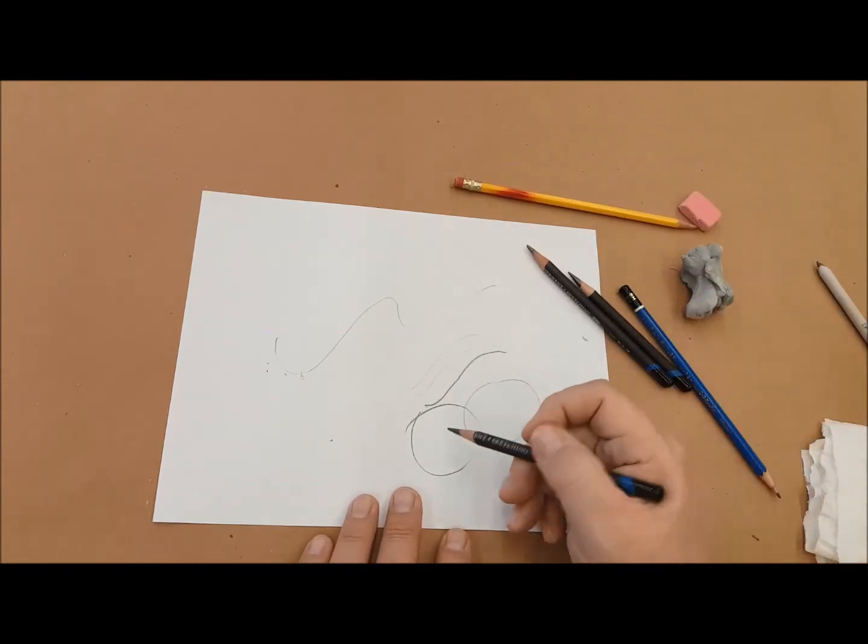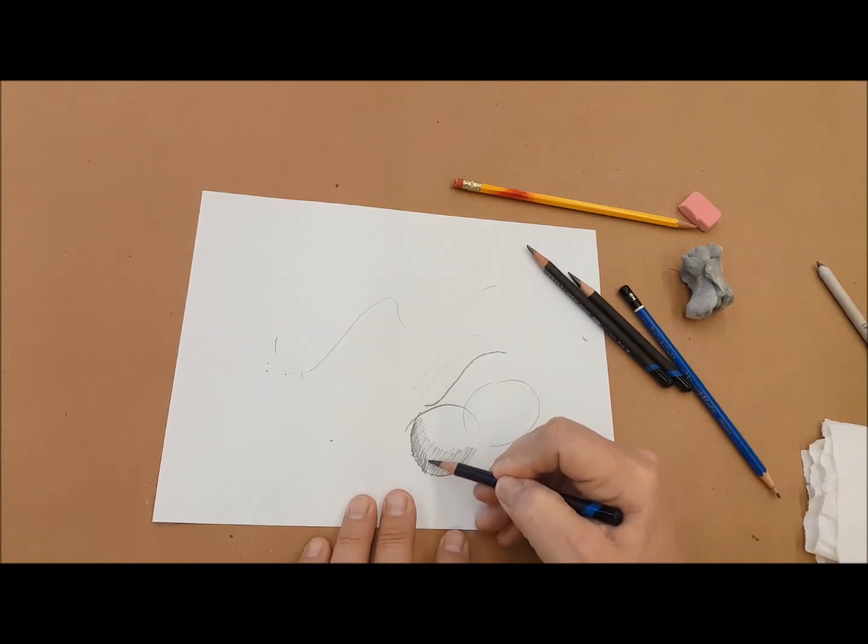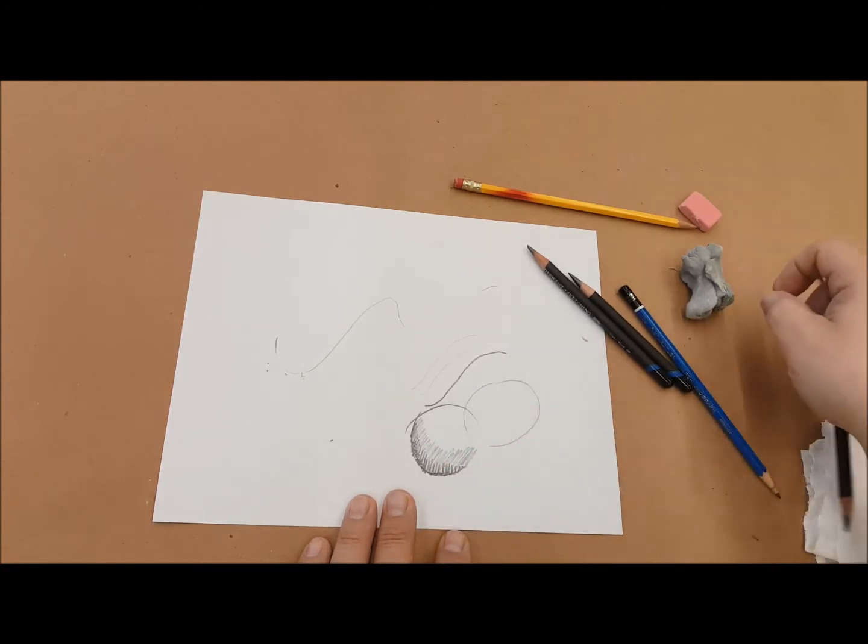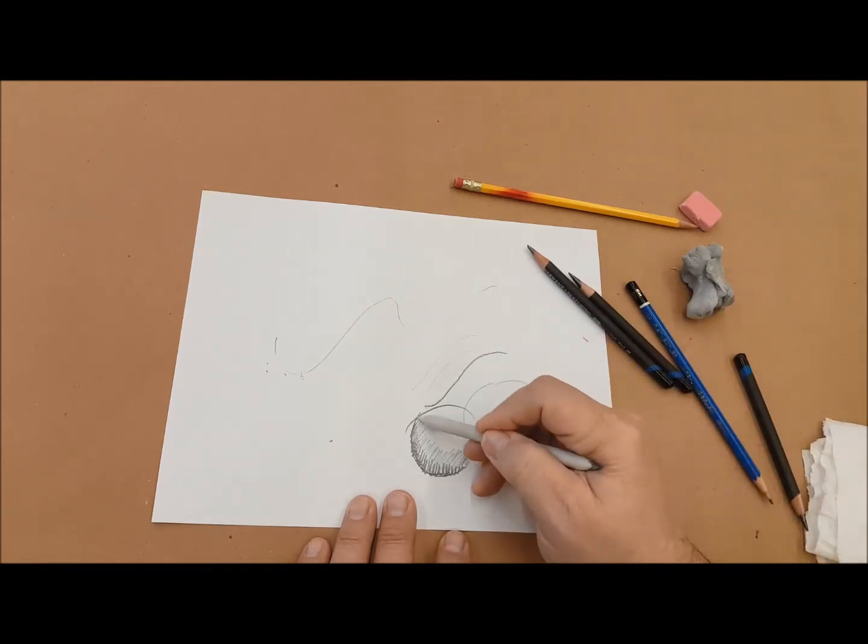When you're ready to shade, let's say I wanted to turn this into a sphere, I could go ahead and shade on the one side, go back and make it a little darker, maybe go over it a third time, and then I can use a tortillion, which is rolled up paper. That can be used to blend stuff and fade it.